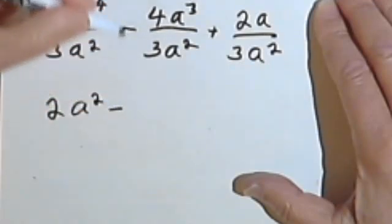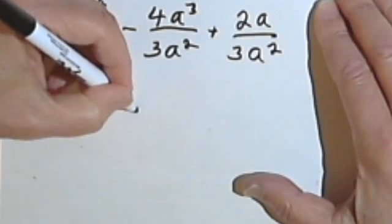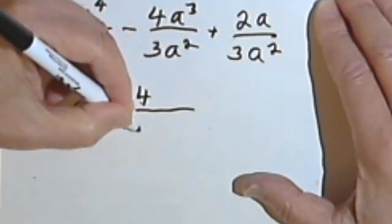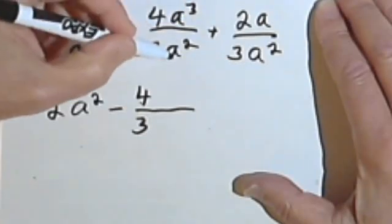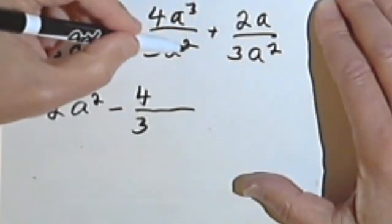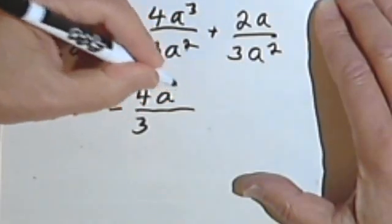Put my minus sign in. 4 over 3, I can't simplify, so this second term is going to be a fraction. And then a³ over a², well, I subtract the 2 from the 3, that gives me a 1, so I've just got a.